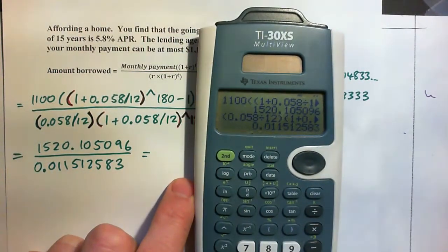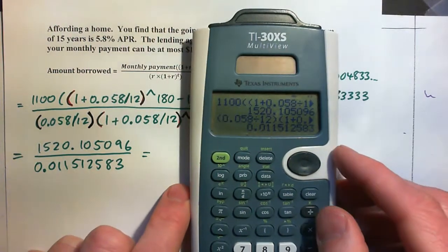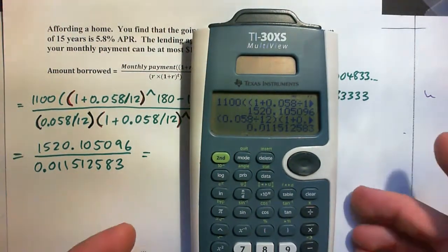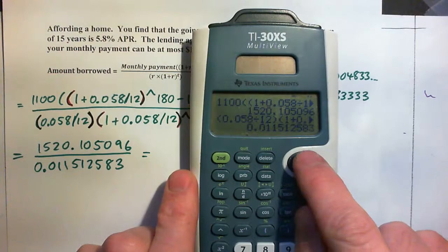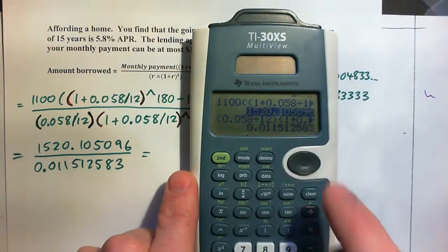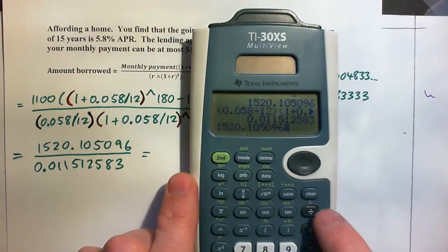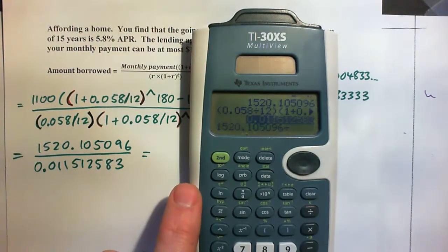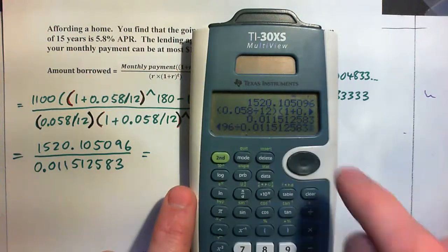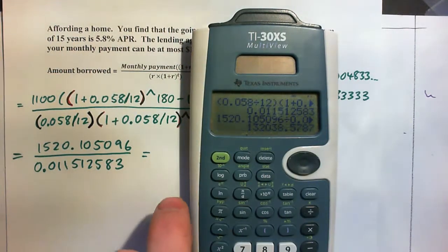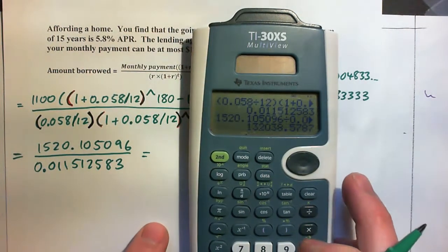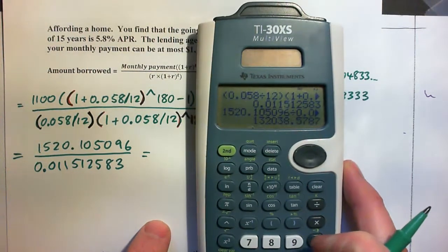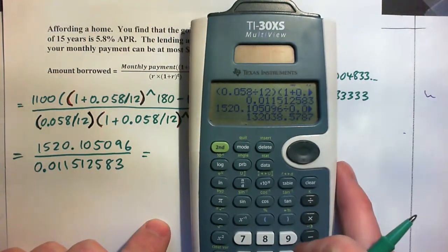So on my calculator, I could type them in and divide, or what I'm going to do is use my arrows. I'm going to go up, I'm going to take that number there, press enter, and there it is. Then I'm going to hit divide, and I'm going to go up and just grab that number, press enter. Divide that by that, and now press enter, and there's my answer. 132038.5787. So I'm going to round that to the nearest what?